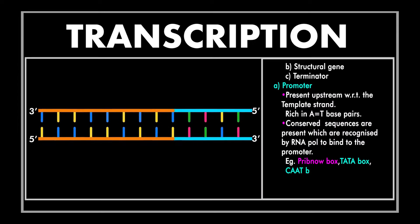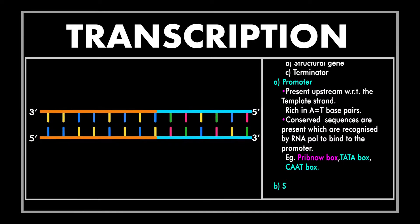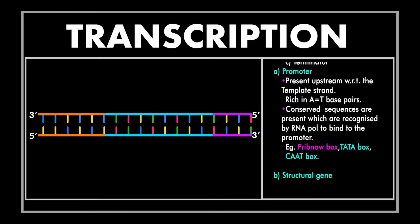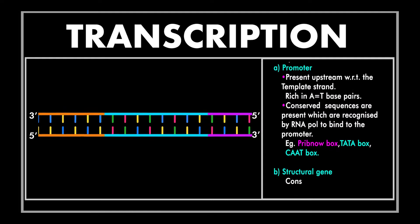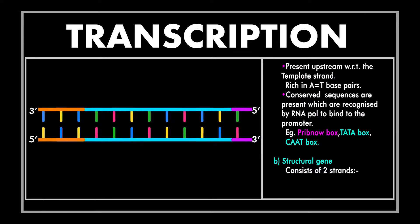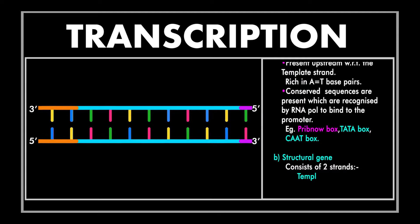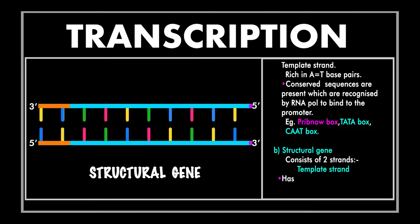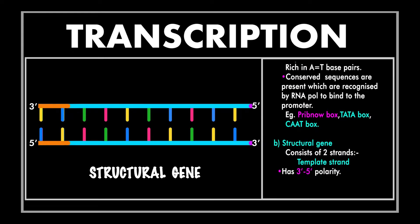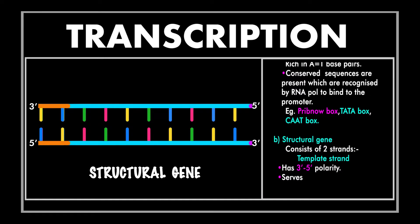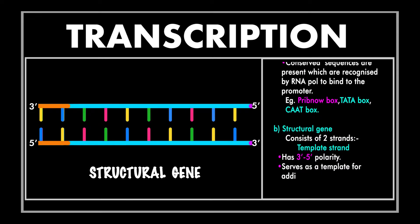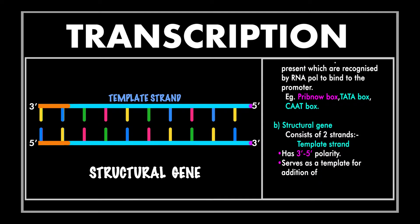The CAT box is found in eukaryotes. The second part is the structural gene. One of the strands of the structural gene is called the template strand or non-coding strand. This strand is in three prime to five prime polarity with respect to the position of the promoter. Transcription, just like replication, is also a template-dependent process.